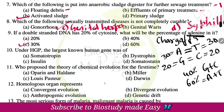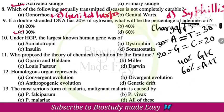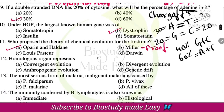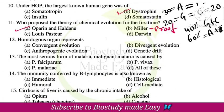The right answer is option C — 30%. Under HGP, the largest known human gene is option B — dystrophin. You should also know which gene is found on which chromosome — these will definitely be asked for one mark. Who proposed the theory of chemical evolution for the first time? That is Oparin and Haldane, who first proposed it, and Miller provided the experimental proof.